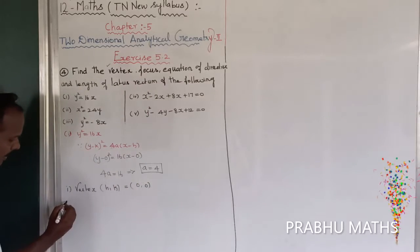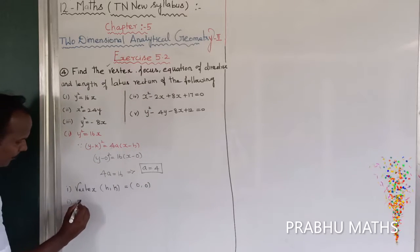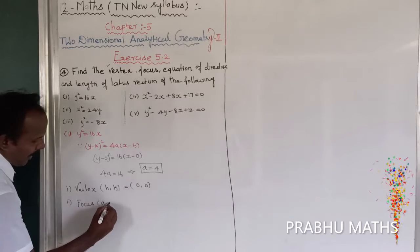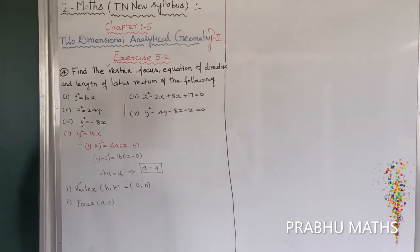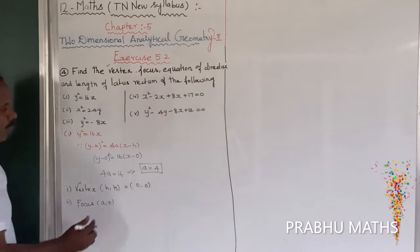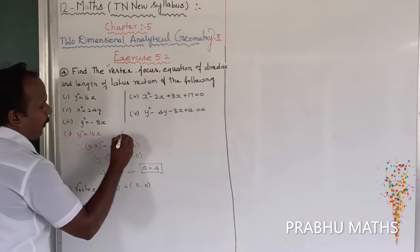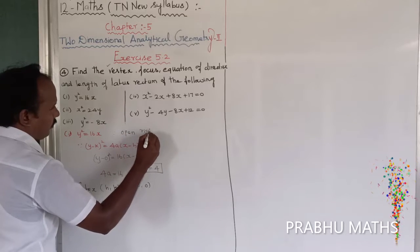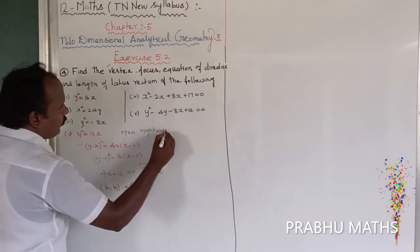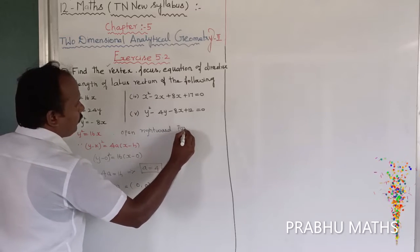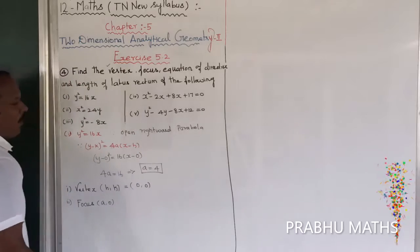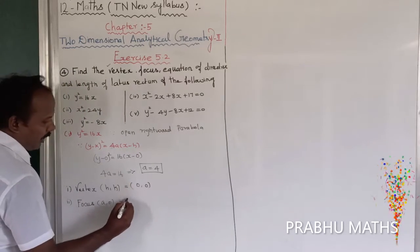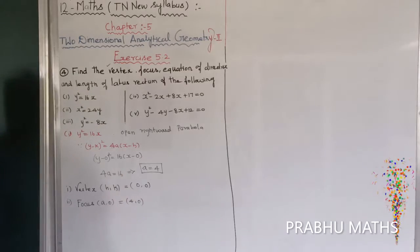Next, find the focus. This is a right-word open parabola, so the focus is at a comma 0. Since a is equal to 4, the focus is 4 comma 0.